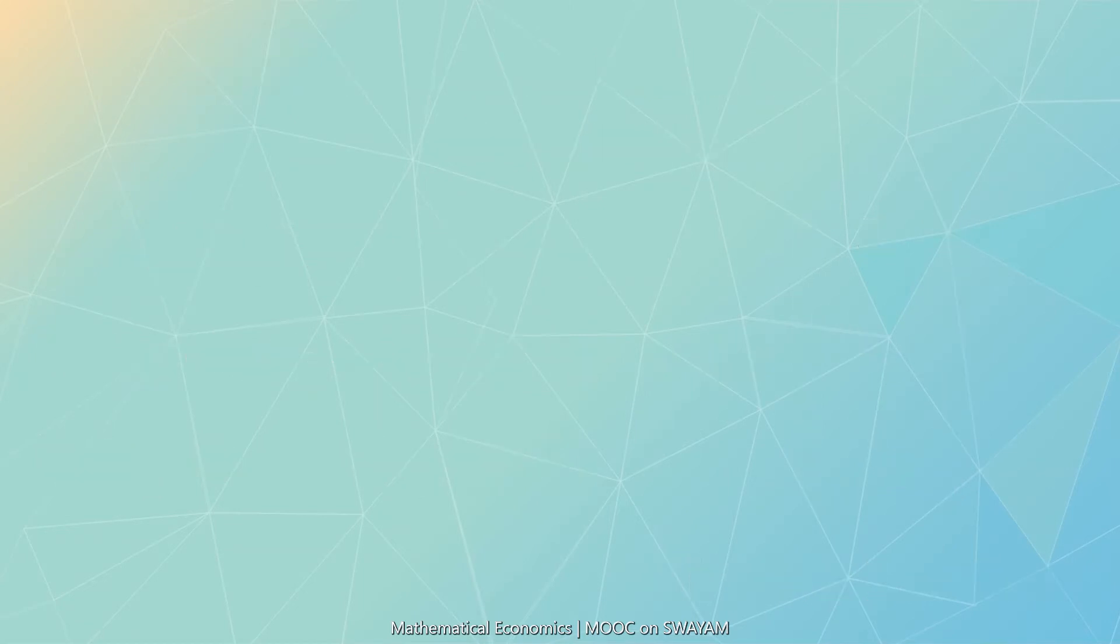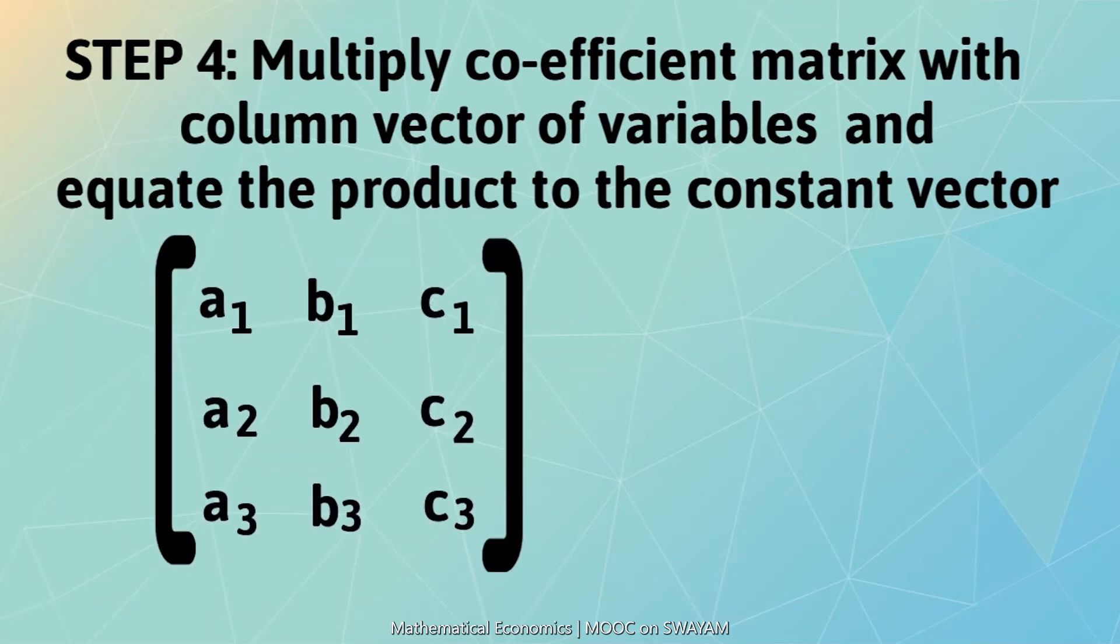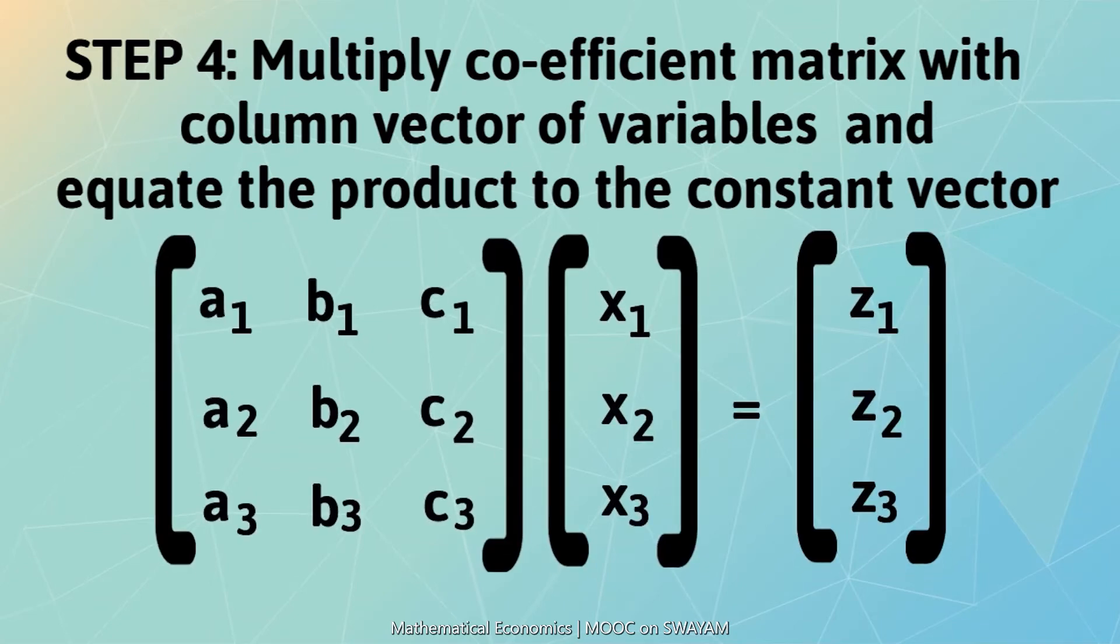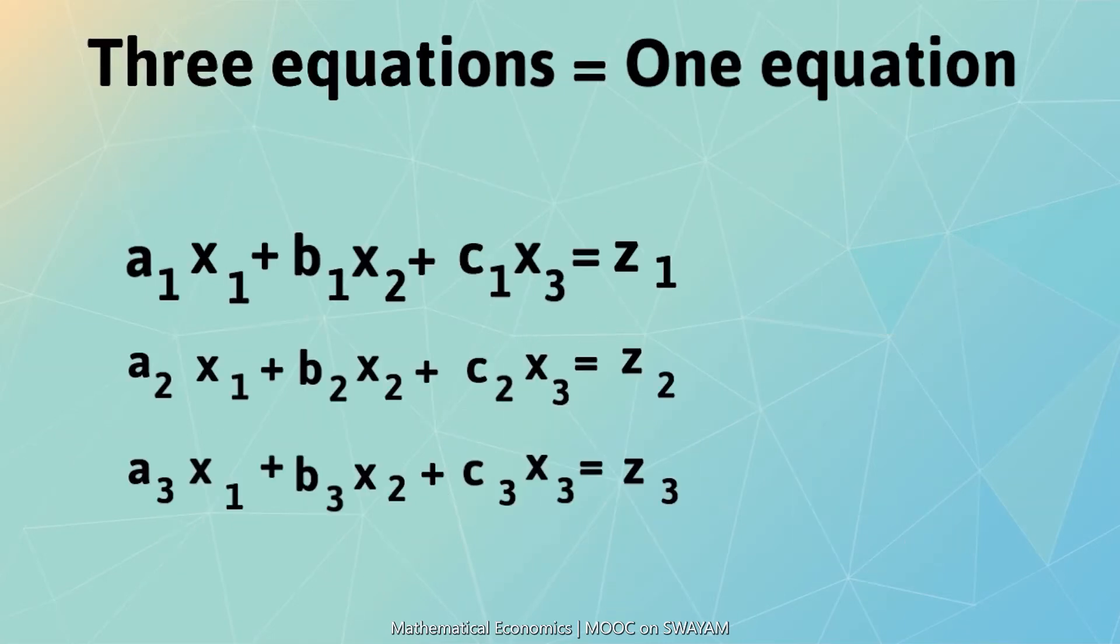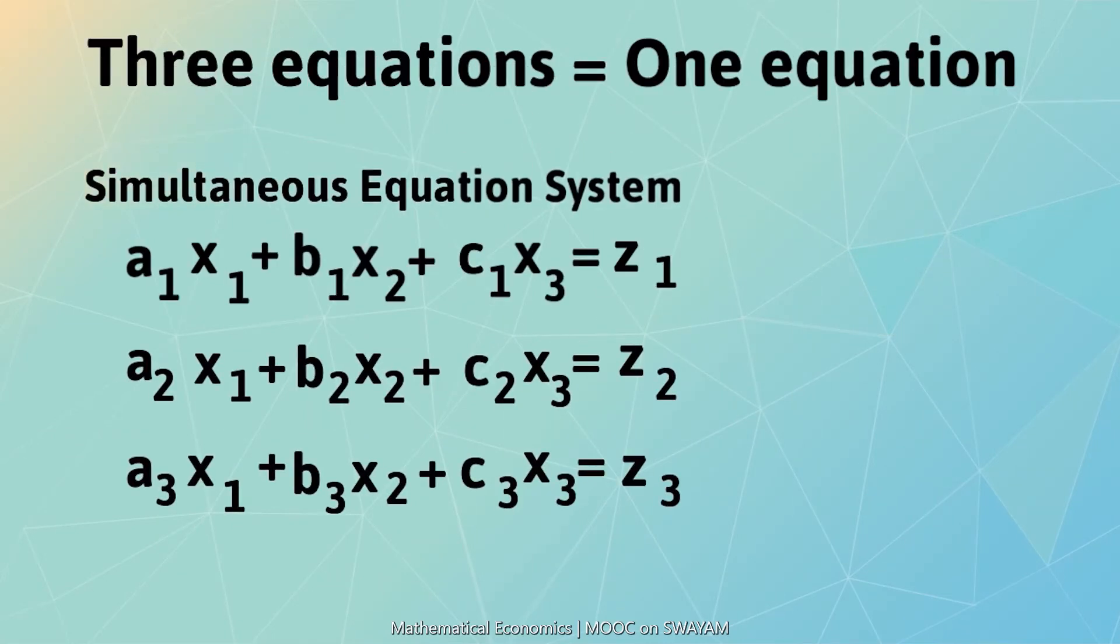In the next step, we multiply the coefficient matrix and the column vector of variables and equate the product to the column vector of constants. Thus, we have arrived at a single equation from a group of three equations.